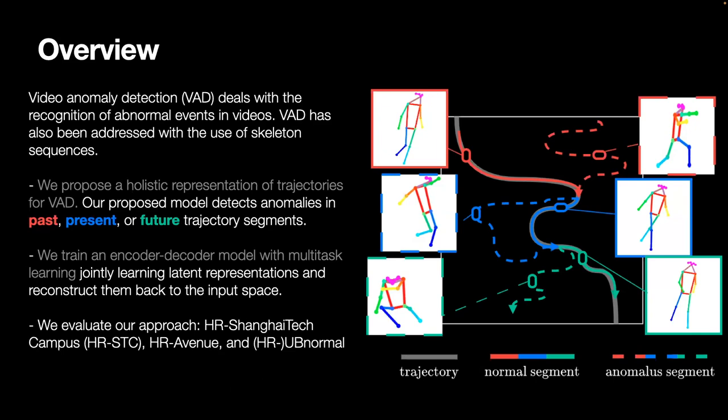Instead of the recognition of anomalies only at specific temporal locations, we propose a holistic representation of trajectories. We show that modeling anomalies over the past, present, and future can lead to strong representations that can enable learning expected actions and behaviors in skeleton trajectories.